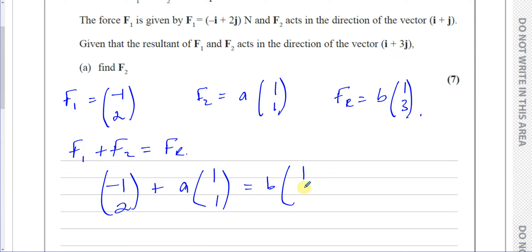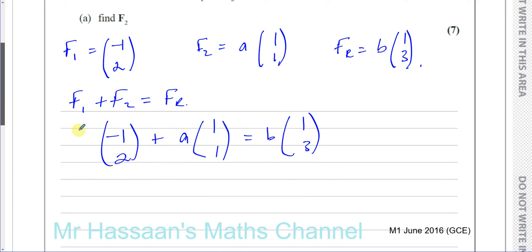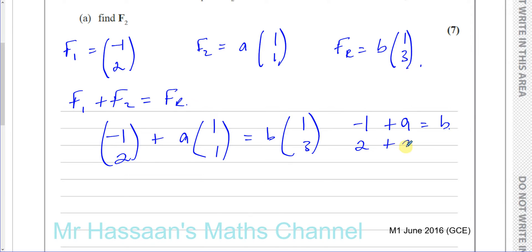From this we can derive two equations. From the i-components: minus 1 plus A equals B. From the j-components: 2 plus A equals 3B. We want to find A because we want to find F2, and we're not asked to find FR in this part of the question.